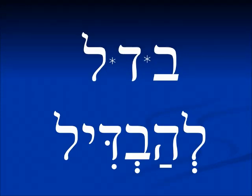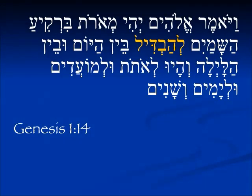This root from Genesis is our first Hifil root. We see the He from the Hifil, and the extra Yud as we see in the other forms — the present tense mav-dil, future tense av-dil, past tense hiv-dil. Here's the He and the Yud in the infinitive form. Vayomer Elohim, Yehi me'orot barakiyah ha-shamayim, l'havdil ben hayom u'ven halayla — and there will be lights in the heavens to separate between the day and the night. Genesis 1:14.